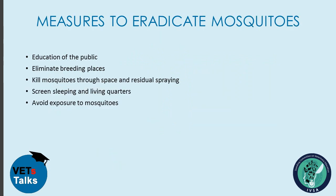Measures to eradicate mosquitoes include: public education about the dangers mosquitoes pose and the diseases they transmit; elimination of breeding places such as stagnant water; killing mosquitoes through space and residual spraying using insecticides; screening sleeping areas with mosquito nets; and avoiding exposure to mosquitoes by wearing protective clothing.